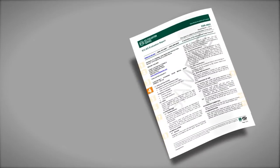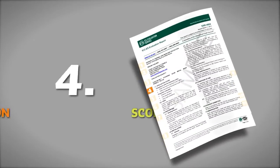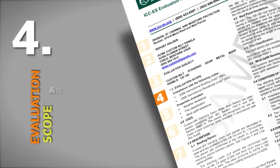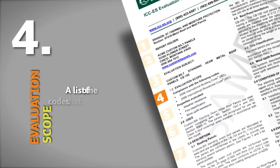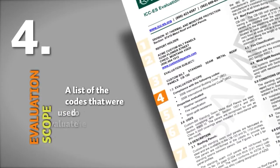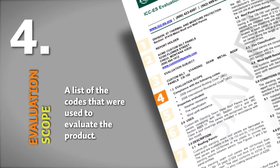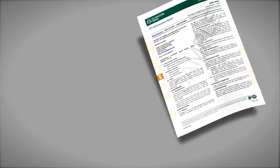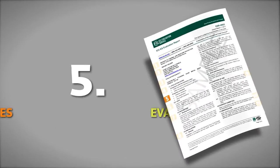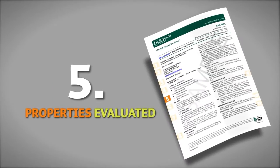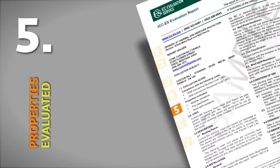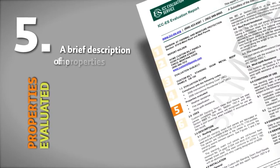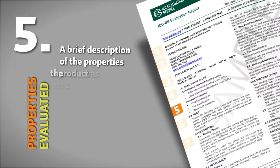4. Evaluation Scope. A list of the code or codes that were used to evaluate the product is provided. 5. Properties Evaluated. The specific properties evaluated for a particular product are identified,